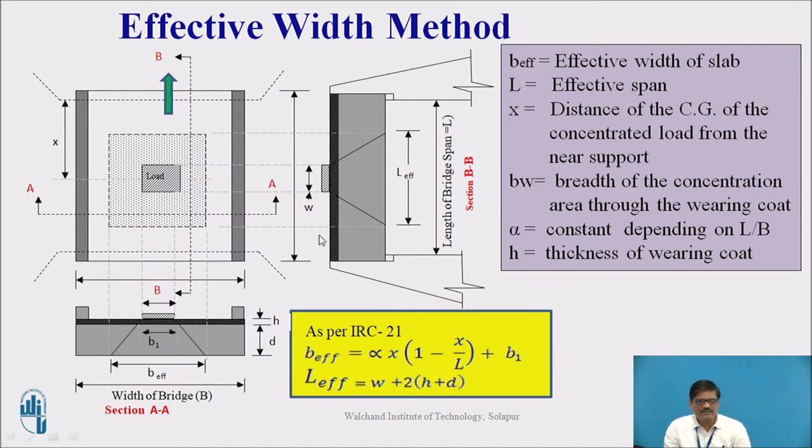This is another picture where we can understand this particular method in more detail. This is a plan wherein we can see a small portion where the contact area is shown, the load contact area. Having a width B in the cross section, if I consider section AA, I will get the bottom section. The width of this vehicle is B, this patch is B.